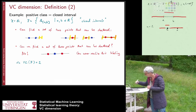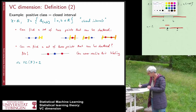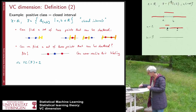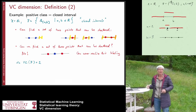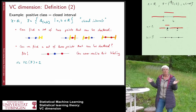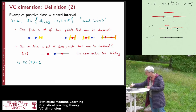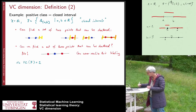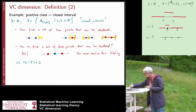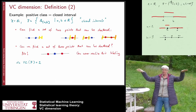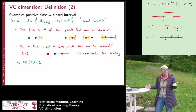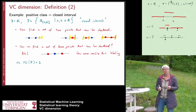Now let's look at n=3. We have three points on the real line and we ask whether we can realize all possible labelings. The answer is no: there is one labeling we definitely cannot achieve — where the middle point has zero and the two outer points have plus one. This is essentially a step function going down in the middle, which is not in our function class of closed intervals.